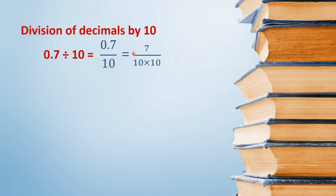So, 0.7 divided by 10, and multiply by 10 — 10 is already here. So this is 10 multiplied by 10 in the denominator. And now your fraction has become 7 by 100. 10 into 10 is 100.